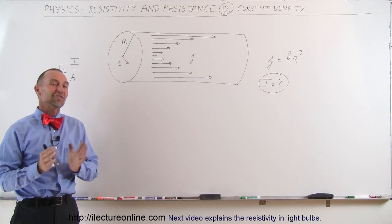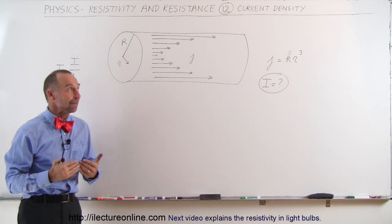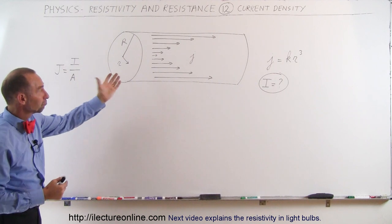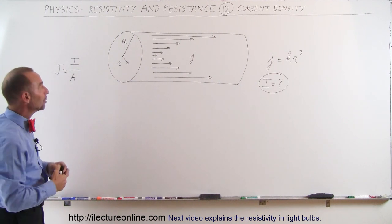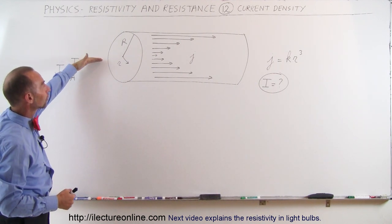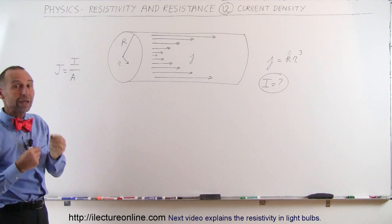Welcome to Electron Line and now let's take a look at current density. Here we have what we call a conductor and notice that the current through the conductor varies with radius.